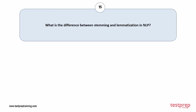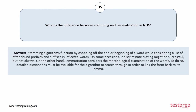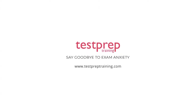Question number fifteen: what is the difference between stemming and lemmatization in NLP? Stemming algorithms work by chopping off the beginning or end of a word, considering common prefixes and suffixes; this can be successful but not always. Lemmatization, on the other hand, considers the morphological examination of words and requires detailed dictionaries for the algorithm to link the word form back to its lemma.